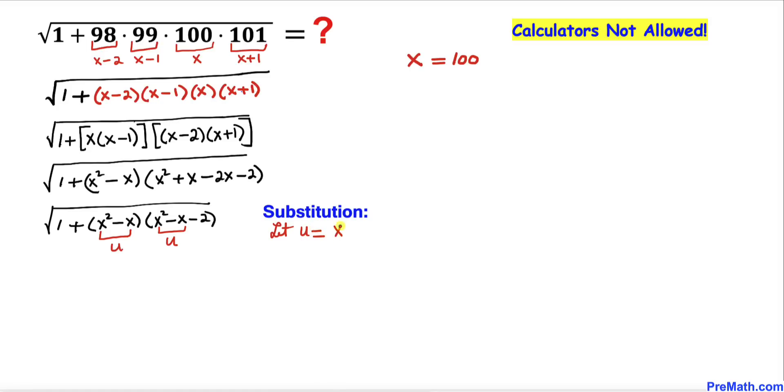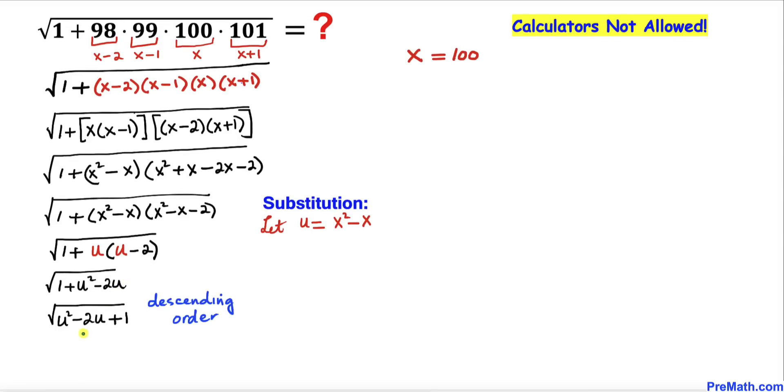Here in this next step I replace this part by u and this part by u as well. Now in this next step I'm going to write down 1 plus, and let's distribute this thing. That's going to give us u squared minus 2 times u.